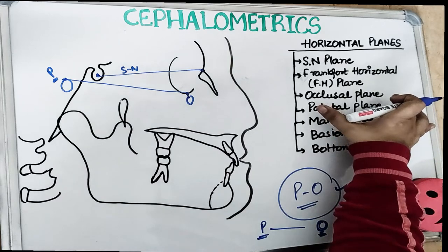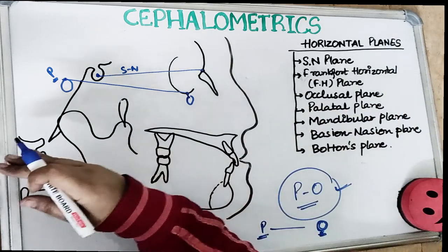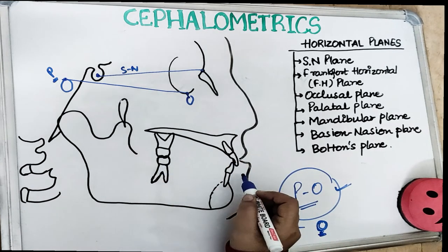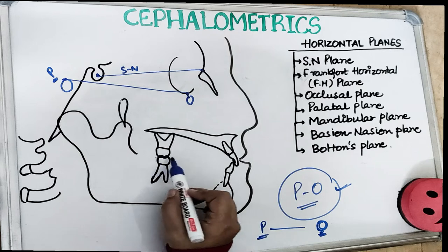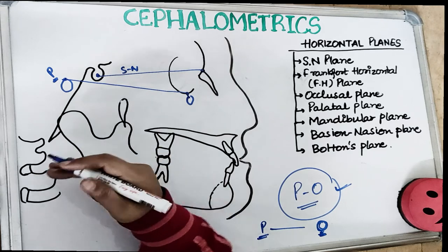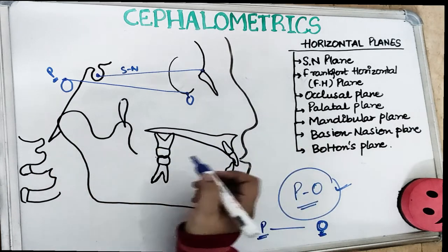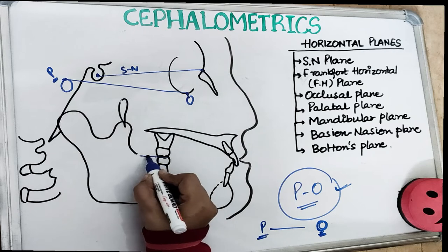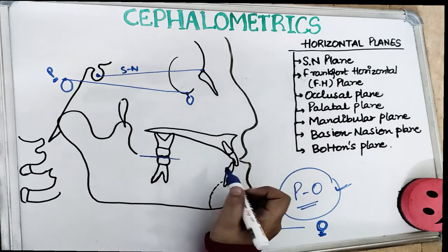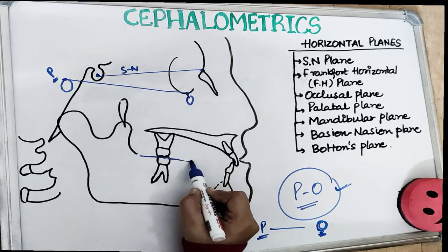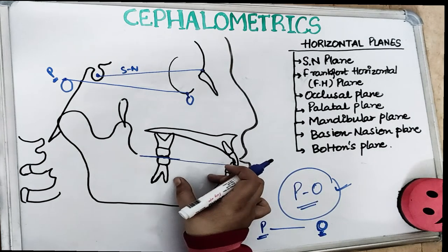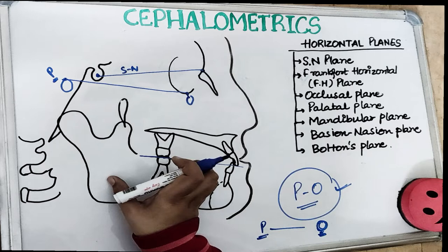The next plane is the occlusal plane. This is a line drawn along the occluding surfaces, going from posterior to anterior — along the occluding surfaces of premolars and molars. In the mixed dentition period, you draw a line along the occluding surfaces of the deciduous molars. A line drawn from the occluding surfaces of posterior teeth — molars and premolars — extended anteriorly to the anterior region gives us our occlusal plane, which is also a horizontal plane.